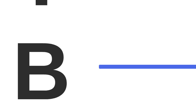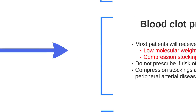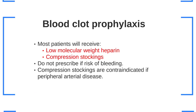Next we have B, which stands for blood clot prophylaxis. This is a very important area and easily missed without the PRESCRIBER mnemonic. Most hospital patients who are not actively bleeding or not just about to have surgery will receive both compression stockings and low molecular weight heparin. However, remember that compression stockings are contraindicated if the patient has peripheral artery disease.